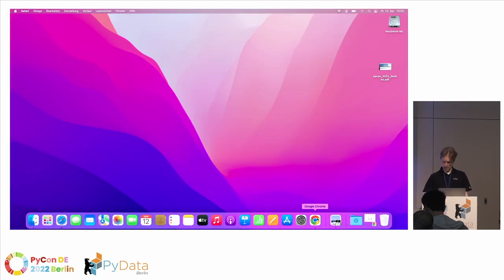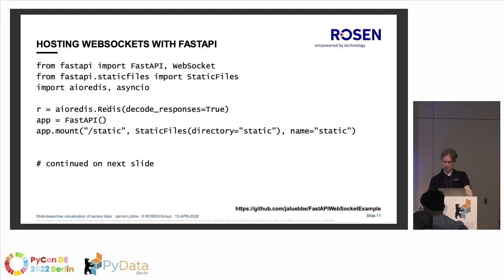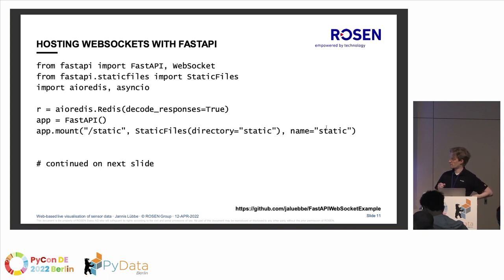Now let's look at how to create the web interface. The code is simplified for the presentation — exception handling is not shown. We use FastAPI, WebSocket from FastAPI, and static files. We use the AsyncIO Redis client and create a Redis connection. This code creates the static file hosting, meaning there are some HTML and JavaScript files in a folder called 'static', hosted at the endpoint '/static' of our web API.